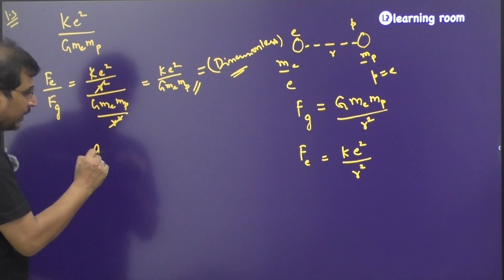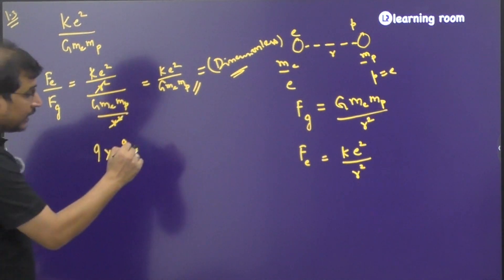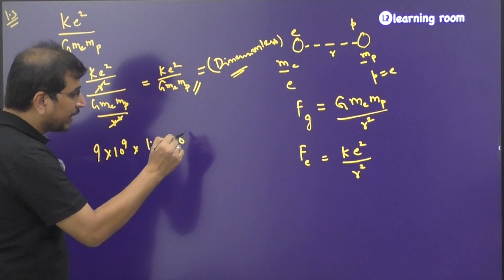So if you see, k value is going to be 9 × 10⁹ into charge of the electron is 1.6 × 10⁻¹⁹ coulomb.